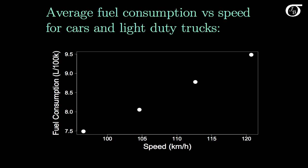In this next example I've plotted fuel consumption versus speed for cars and light-duty trucks. The relationship looks pretty strong, and we could fit a regression line through these points. We might want to use that regression line for prediction — for example, to predict fuel consumption for a speed of 100 km per hour or 110 km per hour. The regression line might work very well in that range.